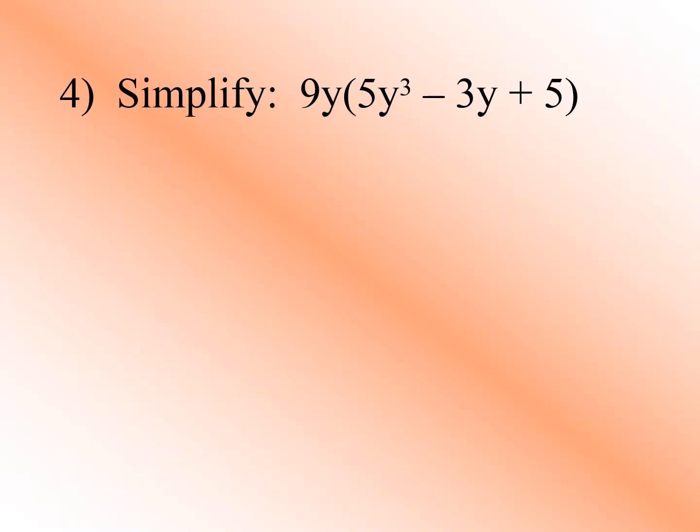Proceed to our next example. Simplify: 9y times the quantity (5y³ minus 3y plus 5). Distribute 9y to 5y³ first: 9 times 5 gives us 45, copy variable y, add exponents 1 and 3 to get 4. So 9y times 5y³ is 45y⁴.